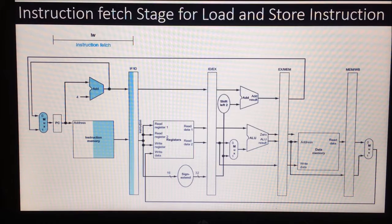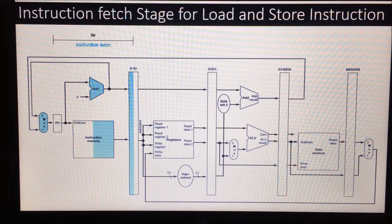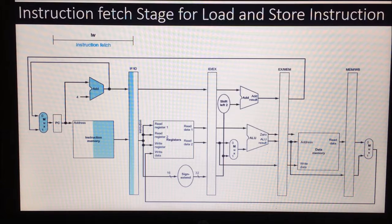We will see different stages for the load instruction — how a load instruction will be executed in different stages of the pipeline using this data path design. In the first stage, the fetch stage, the instruction is read from memory using the address in the PC and then placed in the IF/ID pipeline register. The PC address is incremented by 4 and then PC is updated for the next clock cycle.